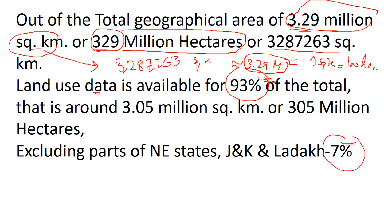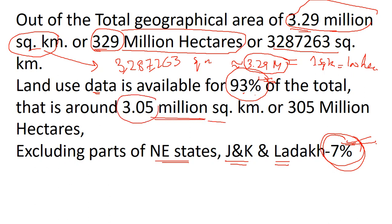The 7% for which data is unavailable corresponds to some parts of the northeastern states and some parts of Jammu and Kashmir and Ladakh. Land use data is available for 93% of the total geographical area, which equals approximately 305 million hectares.